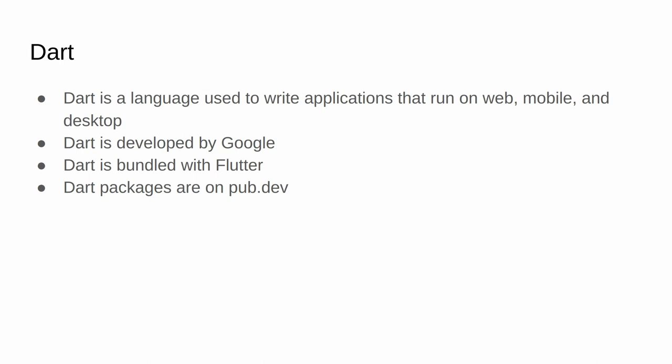Before we can start building the mobile apps, you first need to understand that the games we're going to make are written in a language called Dart. Dart is an object-oriented language developed by Google. You can use it to build apps that run on the web, mobile devices like iPhone or Android, and native desktop platforms on Mac, Linux, or Windows. Dart is bundled with Flutter, so when you install Flutter from flutter.dev, Dart comes with it.